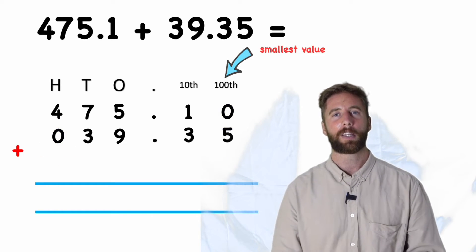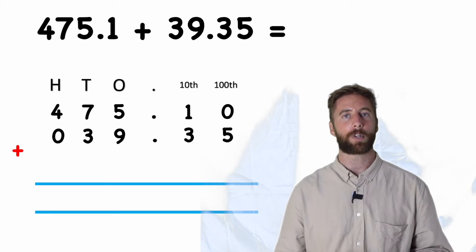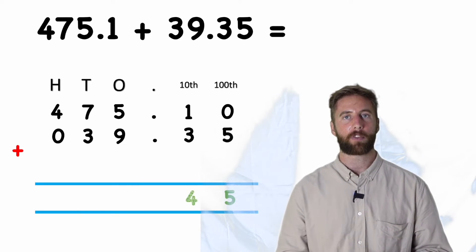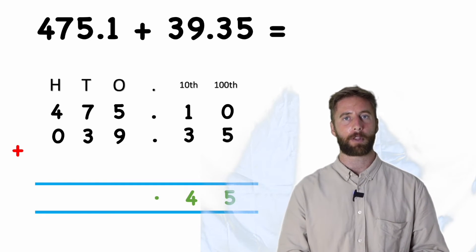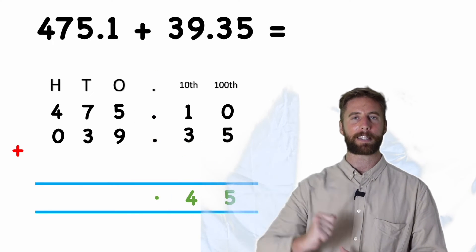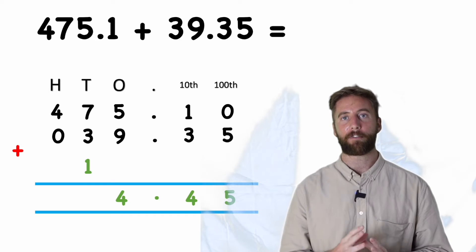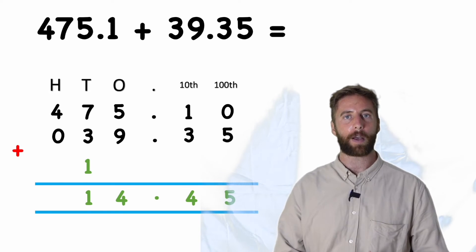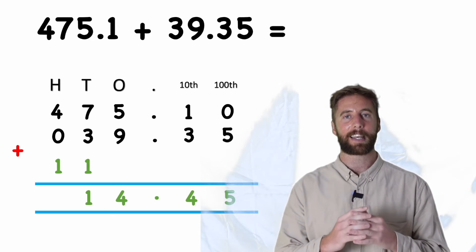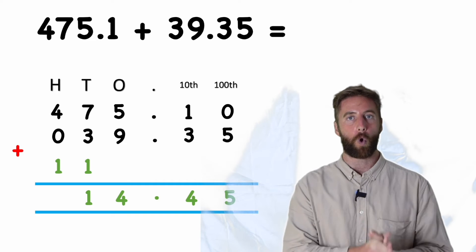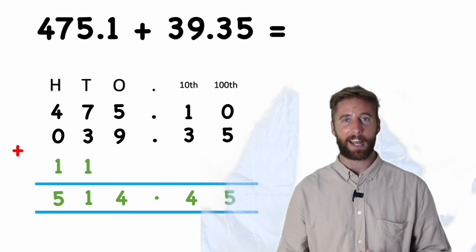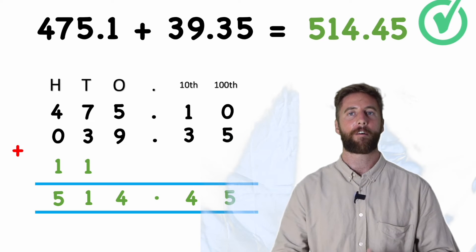We always start with our smallest value, which is now our hundredths column. Zero add five gives me five hundredths. In my tenths column, one add three gives me four tenths. I put my decimal in place — they're all still in line. Now my ones column: five ones add nine ones equals fourteen ones, so that's four ones and I carry one ten. In my tens column: seven tens add three tens add one carried ten equals eleven tens, which is one hundred and ten, so I put the ten in place and carry one hundred. In my hundreds column: four hundred add one hundred equals five hundred. My answer is five hundred and fourteen point four five.